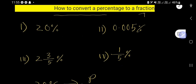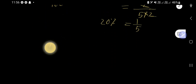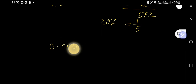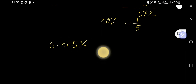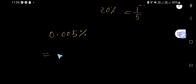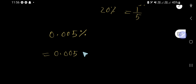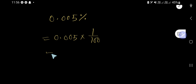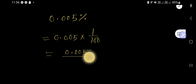Now let us take another example: 0.005%. To convert this, write 0.005 percent as 0.005 times 1 over 100, giving us 0.005 divided by 100.